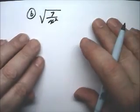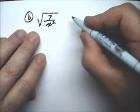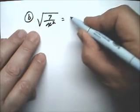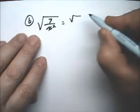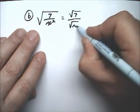Part B is very similar. This is a division, and we can split these. So, this will become the square root of 7 over the square root of x squared.